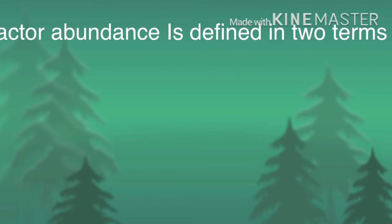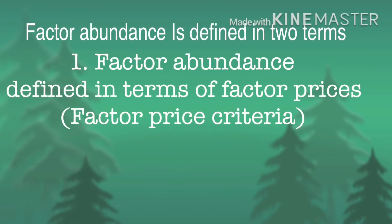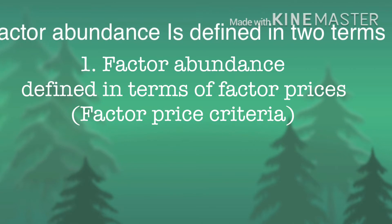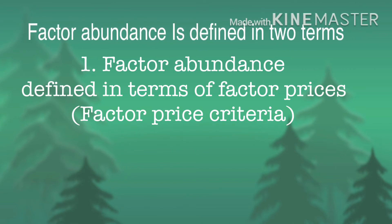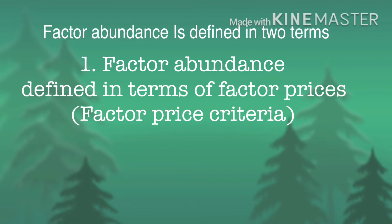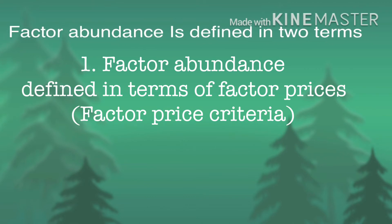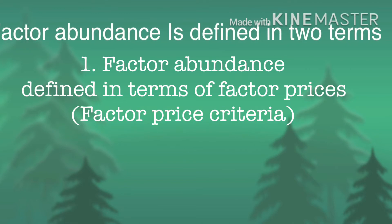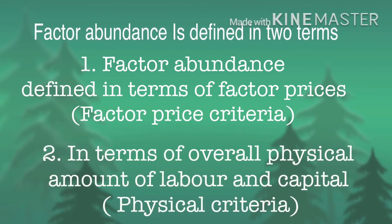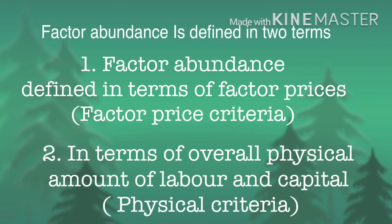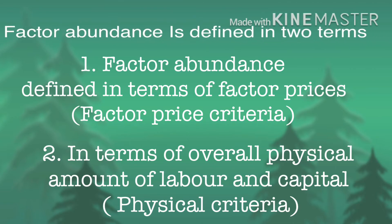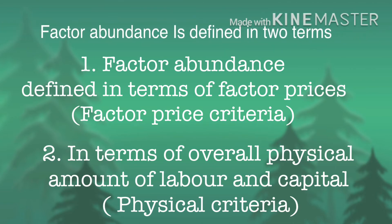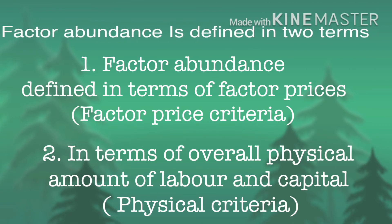One definition runs in terms of factor prices. This definition says that country one is capital-rich compared to country two if capital is relatively cheaper in country one than in country two. The second definition compares the overall physical amounts of labor and capital — it says that country one is rich in capital if the ratio of capital to labor is larger in country one than in country two.